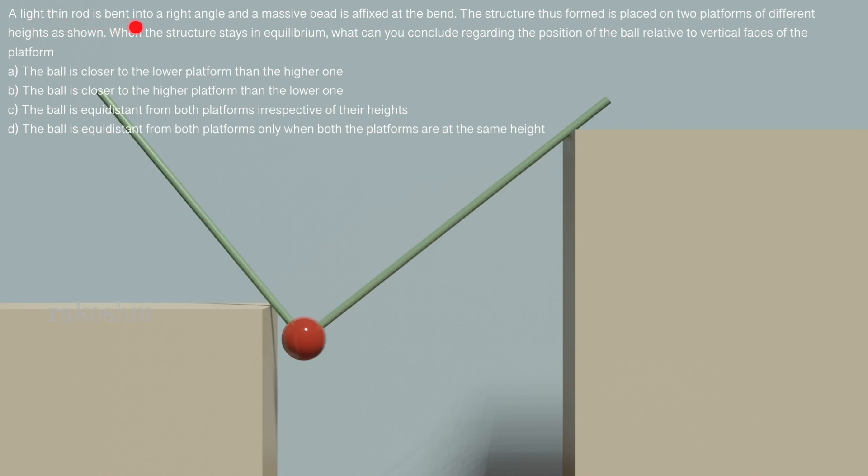A light thin rod is bent into a right angle and a massive bead is affixed at the bend. So we have a light thin rod here. It is bent into a right angle and there is a bead fixed here which is of very high mass.